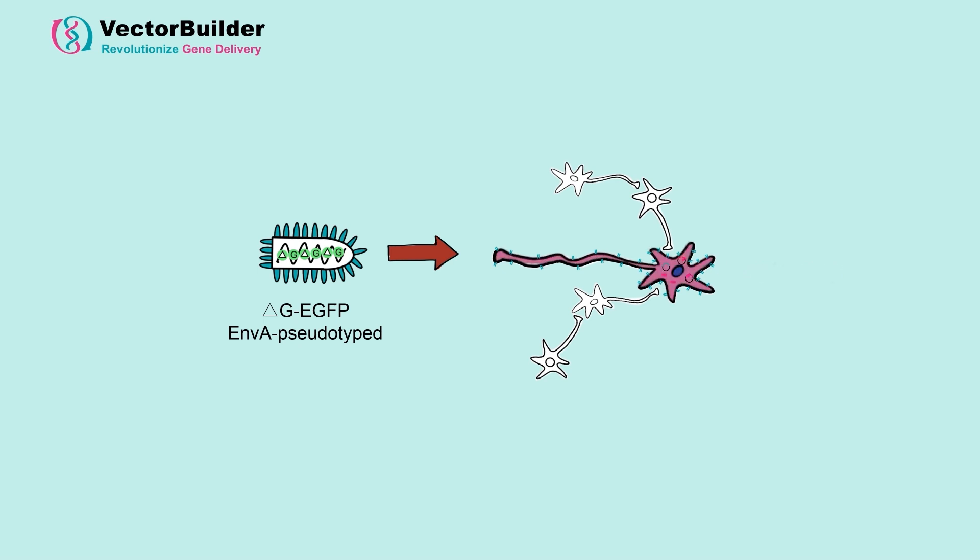The TVA that's expressed is transported to the membrane, allowing infection by the EGFP expressing rabies virus that's pseudotyped with ENVA. In this primary neuron, EGFP is expressed and new virus is made.